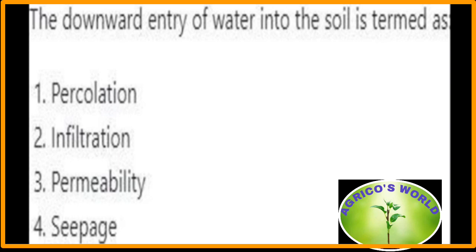The downward entry of water into the soil is termed infiltration. It generally occurs in unsaturated soil. Percolation is the downward movement of water through saturated or nearly saturated soil in response to gravity. Seepage is a horizontal flow of water; water loss from irrigation channels or canals is mainly due to seepage.